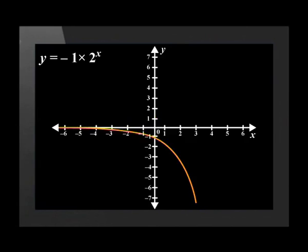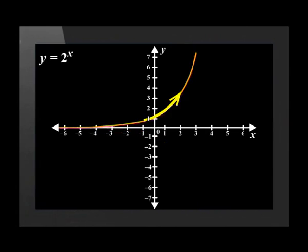If we change the a value to negative 1, the exponential graph is placed below the asymptote. When b is more than 1, the parent graph of the function moves away from the asymptote.